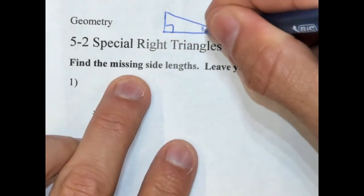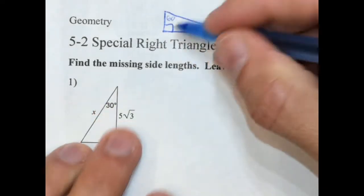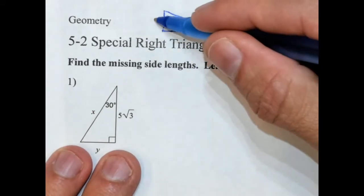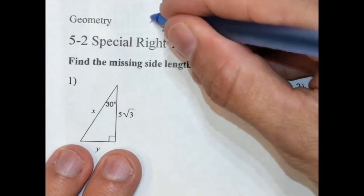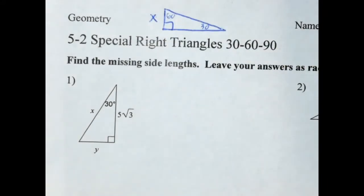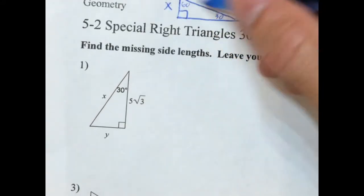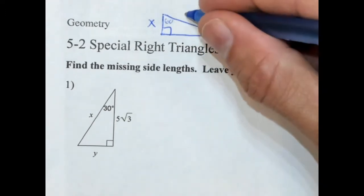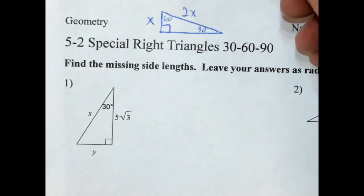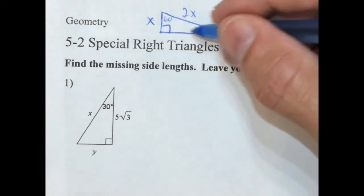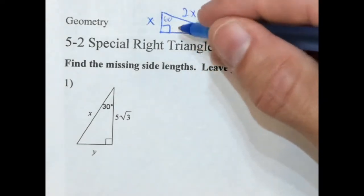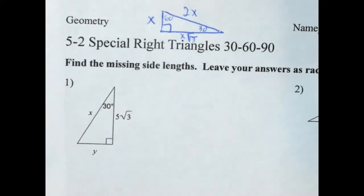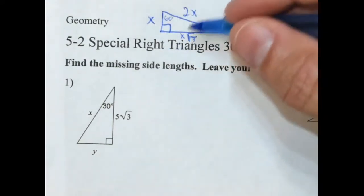This would be 30, this would be 60. The short leg will be the leg opposite the 30-degree angle — in this case it's here — and this would be our x. The hypotenuse, which is the side opposite the 90-degree angle, is going to be double the length of the short leg. And the longer leg, which is the leg opposite the 60-degree angle, is going to be x times the square root of 3. And that's going to be the formula we use.